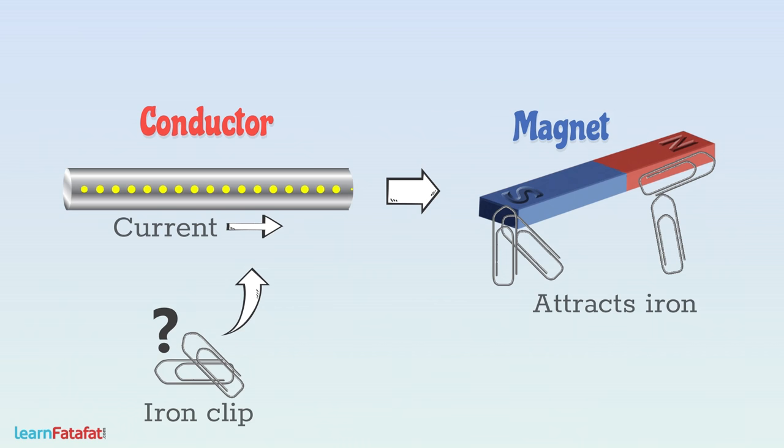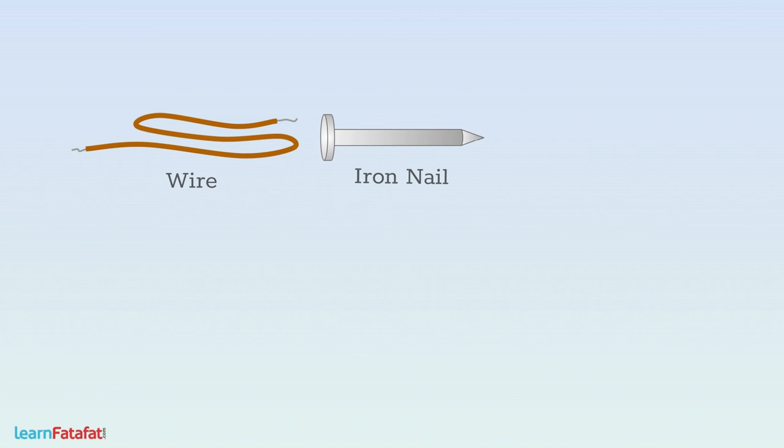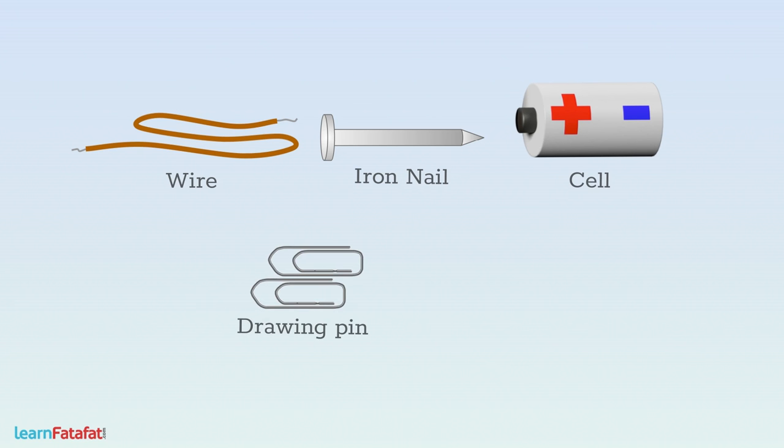Let's find out the answer through this activity. Take an insulated wire of about 80 cm long, an iron nail, a cell, a drawing pin, and a switch.